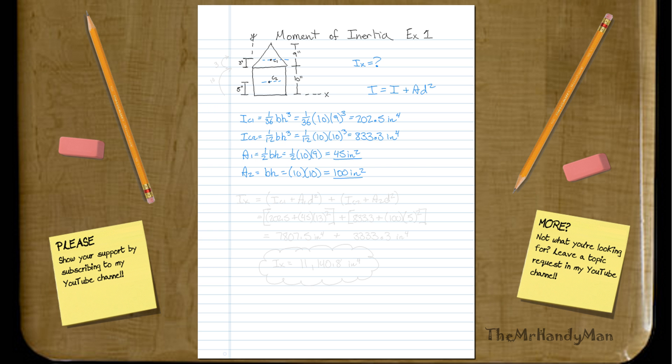Okay, so now when we translate each of these to the x-axis, we will be able to just add them together. So quite simply, I x will equal I of C1, the triangle, plus the area of the triangle, so a1, d squared, plus I of the square, so the inertia about the centroid of the square, plus a2, d squared.